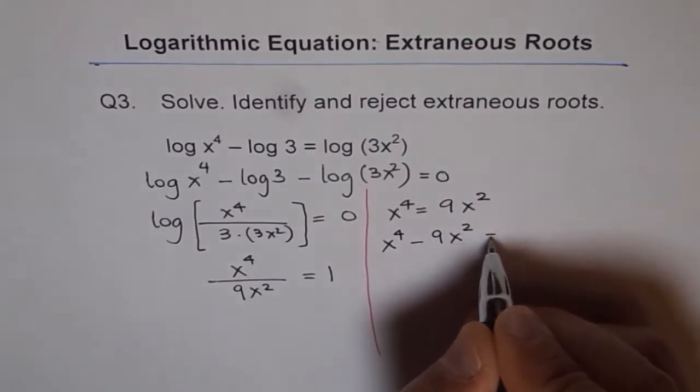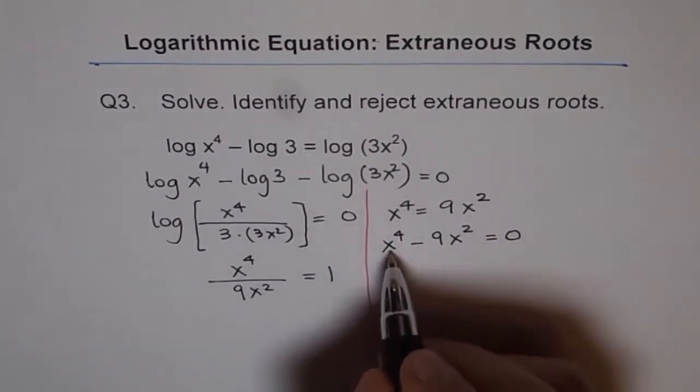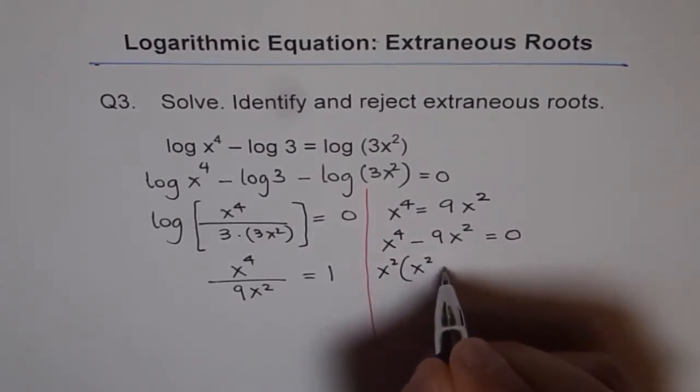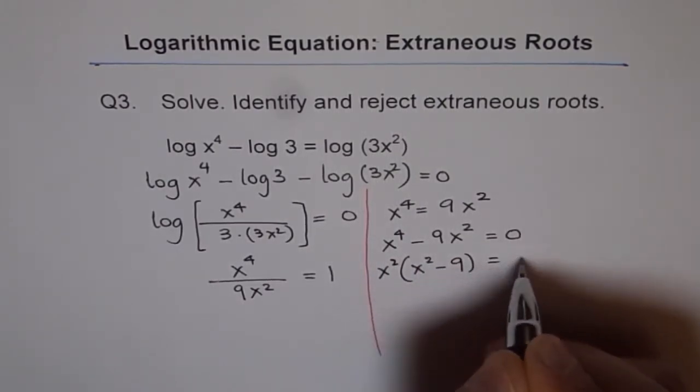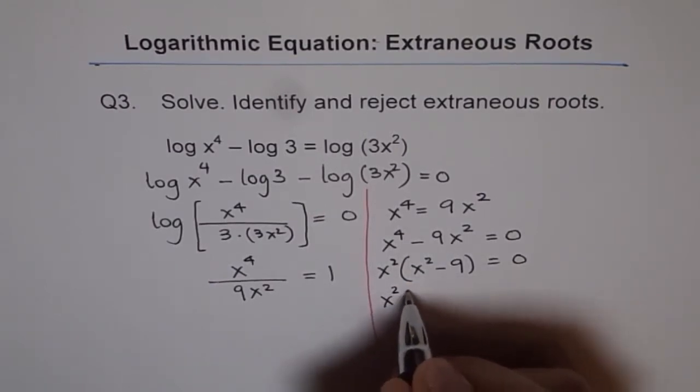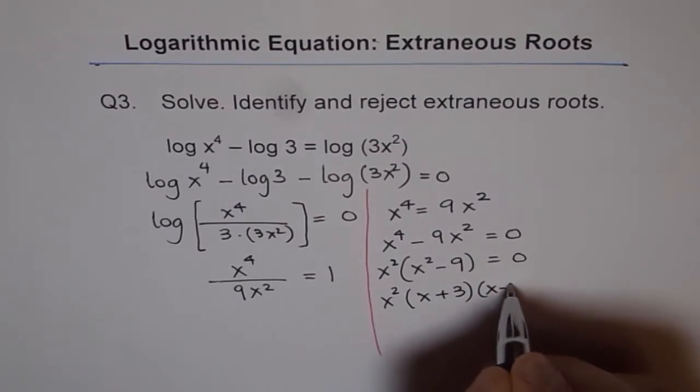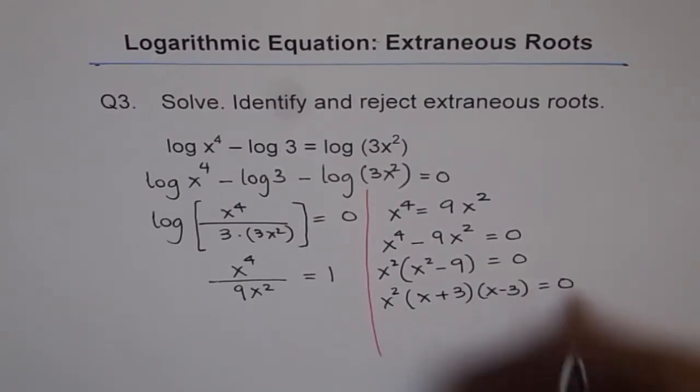Now x squared is common. So x squared and we get x squared minus 9 equals to 0. Now this can be factored and we get x squared, x plus 3 times x minus 3 equals to 0.